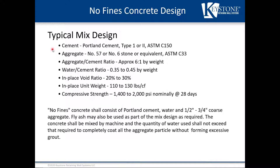The typical mix design uses Portland cement Type 1 or Type 2. Aggregate size is number 57 or number 6 stone equivalent. The aggregate-to-cement ratio is 6 to 1 by weight, and the water-to-cement ratio is 0.35 to 0.45 by weight. In-place void ratio is 20 to 30 percent, in-place unit weight is 110 to 130 pounds per cubic foot, and compressive strength is 1,400 to 2,000 psi at 28 days.